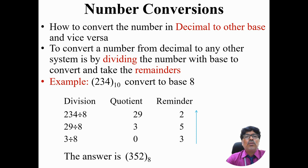Now focus on the remainders. We place the remainders from bottom to top: 3, 5, 2 — giving 352 of base 8. So the answer is: 234 of base 10 is represented in octal as 352 of base 8.